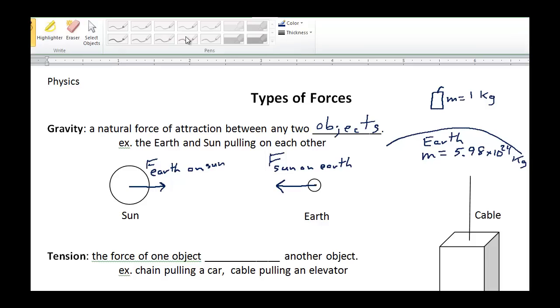So there is a force of attraction between these two objects. We can draw these in and label them. There is the force of Earth pulling down on the mass. And likewise, there is a force of the mass pulling up on the Earth.